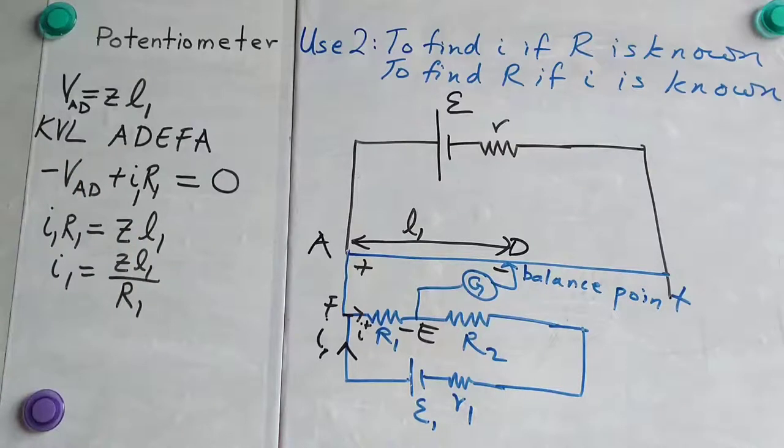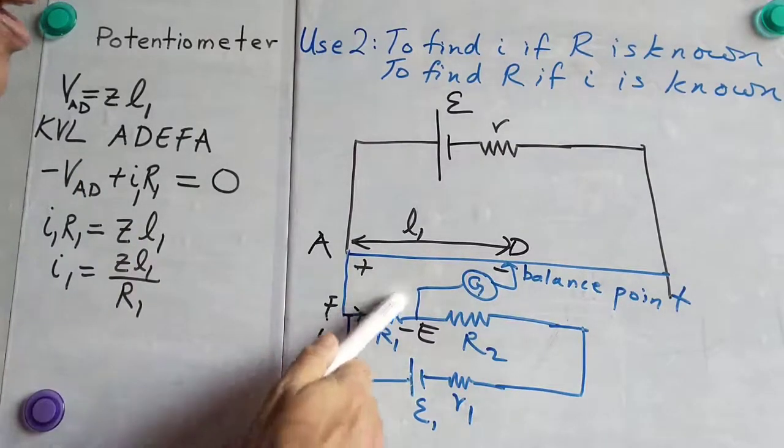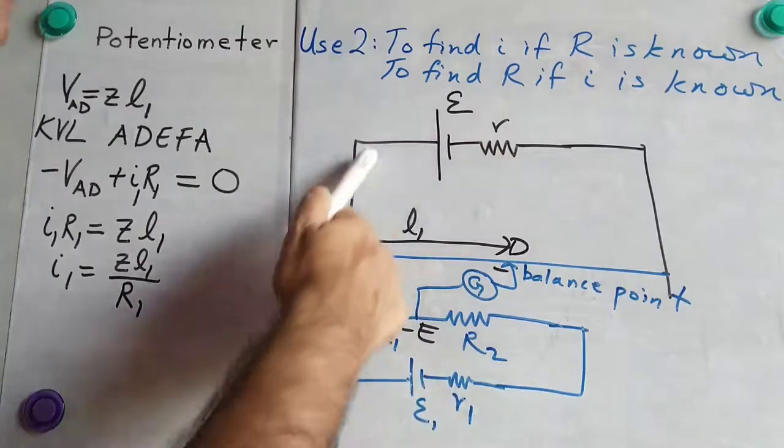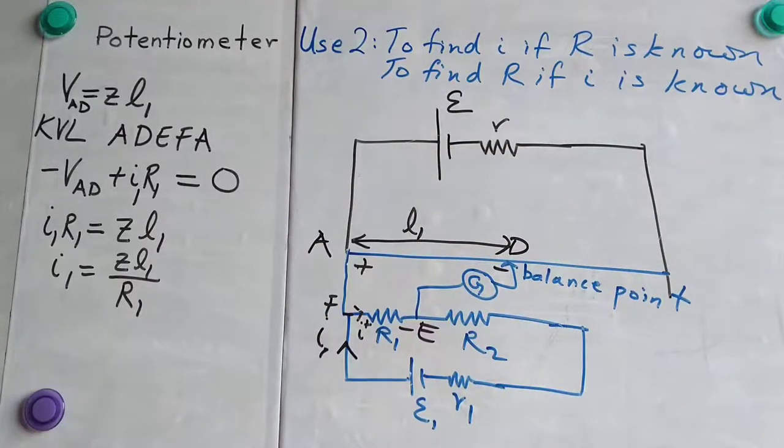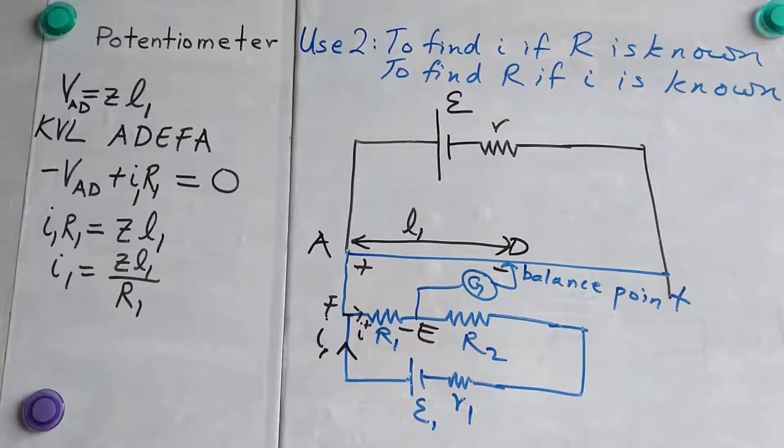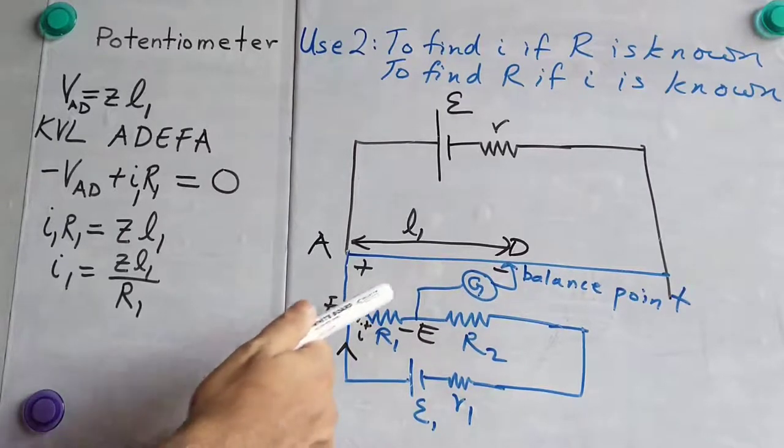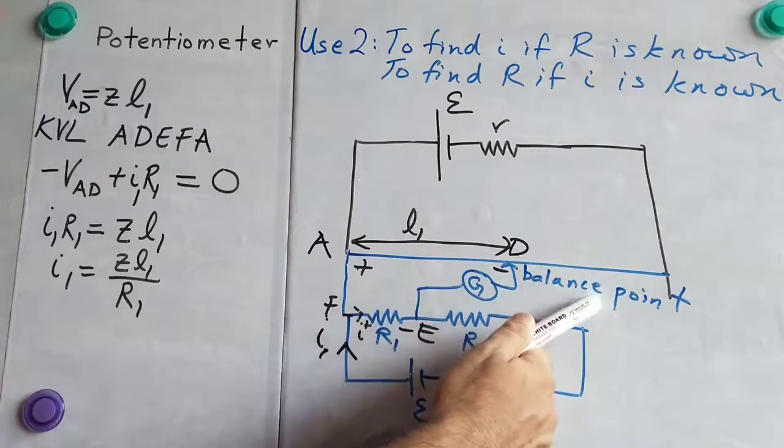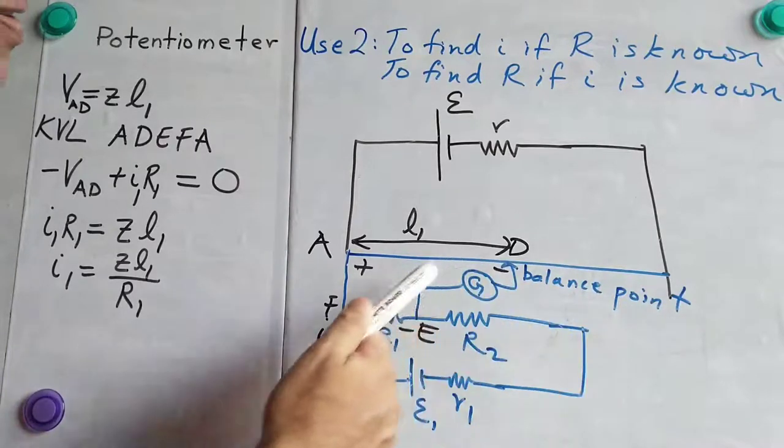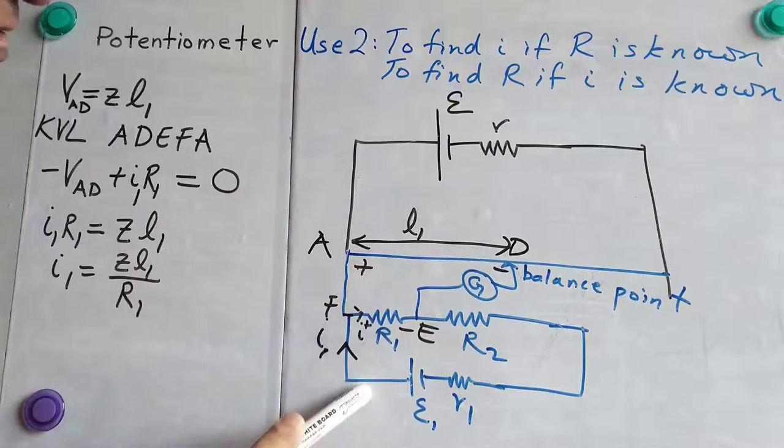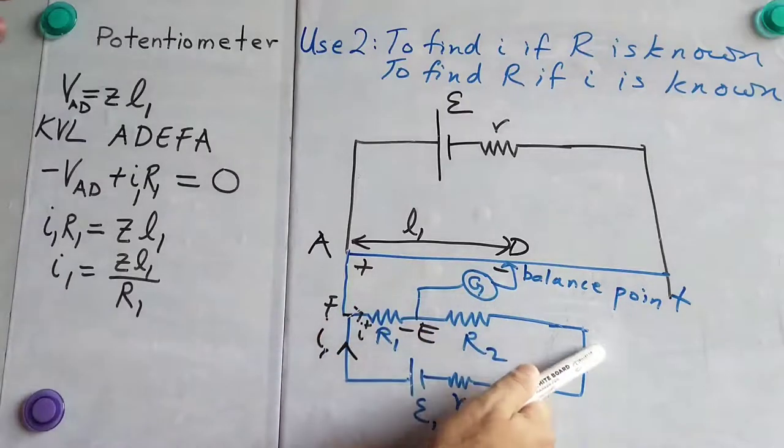So, this way we can get the exact value of current, because this current is now not getting disturbed by this equipment. If we connect an ammeter, the circuit gets disturbed, because ammeter has got some resistance, even though that resistance is small, but some resistance is there, it disturbs the circuit. This potentiometer at the balance point is not taking any current from this circuit. So, this current is measured accurately.